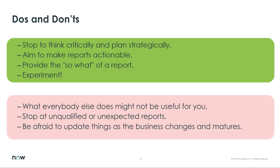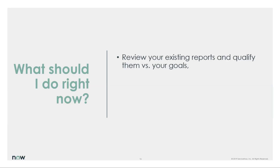A couple things to not do. Don't just do what everybody else is doing because you heard it — your organizational goals may be entirely different from another organization, so you need to make sure that your reports align to those goals. Don't stop at unqualified or unexpected reports — make sure that people reviewing your reports are expecting them, they know what they're for, they're labeled clearly, and people understand what this data is trying to tell them. And finally, do not be afraid to change things as your business changes and matures over time. The reports that help you do better work at maturity level one will not be nearly as useful at maturity level three. Go out and take a look at the reports you're using and make sure they line up against your organizational goals.